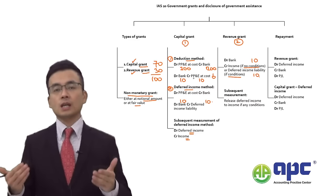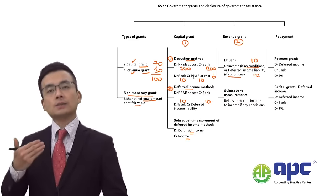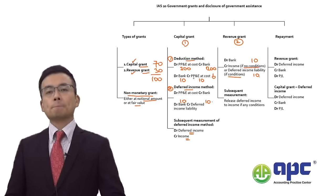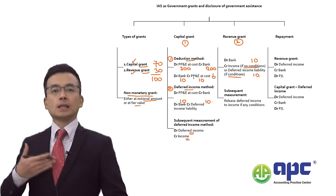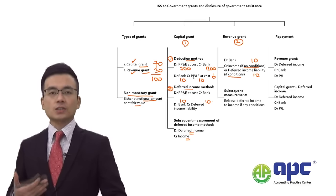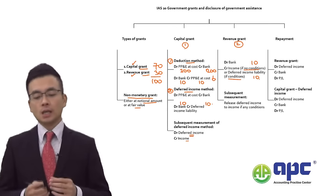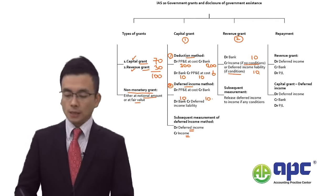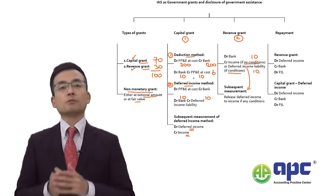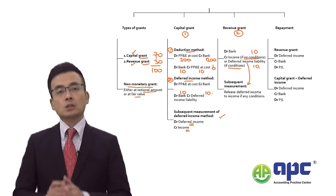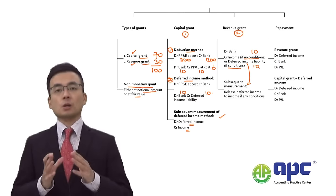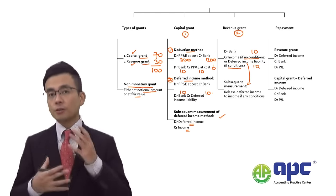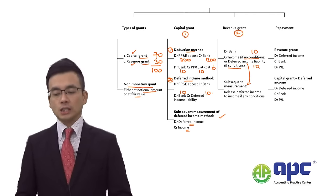For example, the government gives you $10 and it finally belongs to you only if you meet employment targets or recruitment numbers. For subsequent measurements with deferred income liability, you debit the deferred income liability according to the conditions and credit income, or release it to income in P&L once you finally meet the target.